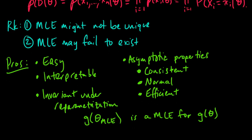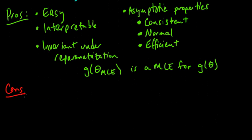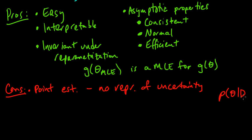Now, I would like to mention a few cons. First, the MLE is a point estimate, so it has no representation of our uncertainty. Ideally, we would look at the posterior distribution on theta given the data, and that would represent how uncertain we are about theta. But the MLE is just a point estimate, so we don't really know whether that's a representative value.